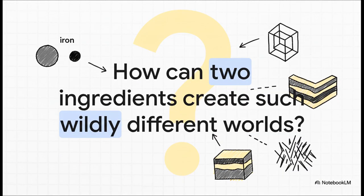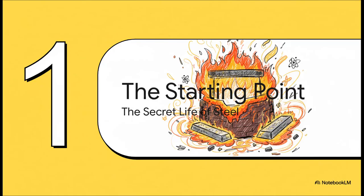So this brings us to the big question: how is it that an alloy made of pretty much just two simple things — iron and carbon — can create such an incredible diversity of structures inside? Well, the answer isn't really in the ingredients themselves, but in the journey they take.